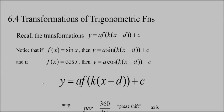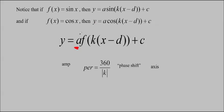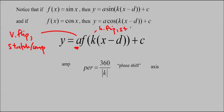You will recall that transformations are y equals a f of kx minus d plus c. If we just replace the f of x with sine x, then we get y equals a sine kx minus d plus c. And if you replace it with cos x, then you get y equals a cos kx minus d plus c. And you'll probably remember that a is the vertical flip and or stretch slash compression. k is the horizontal flip, stretch and compression. d is the horizontal translation, left and right. And c is the vertical translation up and down.